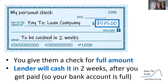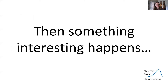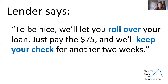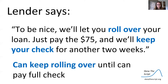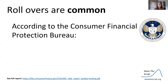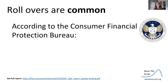You give them a check for this full amount, $575, and the lender will cash it in two weeks after you get paid so your bank account is full. Two weeks pass and something interesting happens. Your lender says, to be nice, we'll let you roll over your loan — just give us the $75 and we'll keep your check for another two weeks. This is called a rollover. You can keep rolling over until you can pay your full check. According to the Consumer Financial Protection Bureau, over 80% of payday loans are rolled over, and over 60% of loans go through seven or more cycles — six or more rollovers. These are really common.